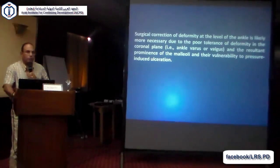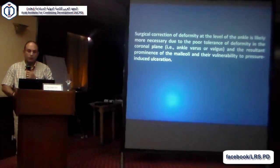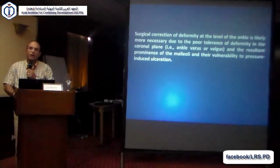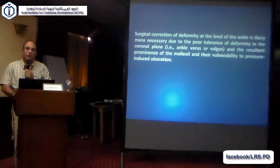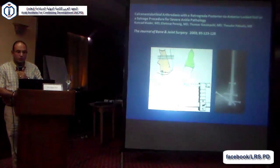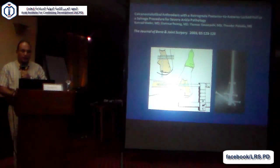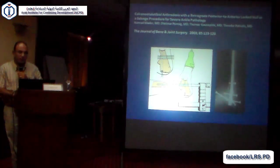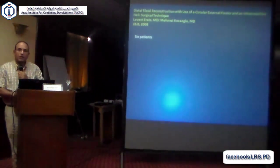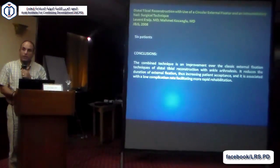Most midfoot deformities are better tolerated by diabetic patients compared with ankle joint involvement, which usually leads to varus and valgus deformity. Even if you try to protect patients using a brace, because of the deformity there will be friction between the bone and the brace, and usually you will develop large ulcers. One method is to use a retrograde intramedullary nail for arthrodesis. Sometimes you can combine intramedullary nails together with external fixators to shorten the duration of external fixation.